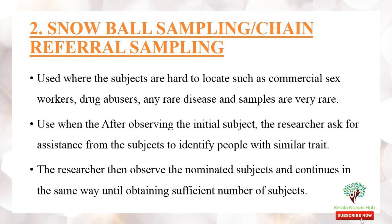The second method is snowball sampling, or chain referral sampling. This is used where subjects are very hard to locate, such as commercial sex workers, drug abusers, or people with rare diseases. After observing the initial subject, the researcher will ask for assistance from the subject to identify people with a similar trait. The researcher finds the first person and seeks help from that person, then observes nominated subjects and continues until obtaining a sufficient number of subjects.